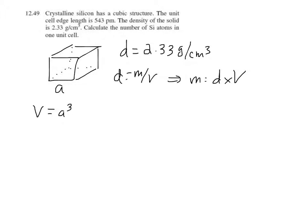So how do we get the volume? Well, we cube the length. The length is 543 picometers, but notice it's in picometers, and our density deals with centimeters cubed. So that's probably a hint that we want to convert one or the other to the same unit. So let's convert picometers. I think that'll be easier.